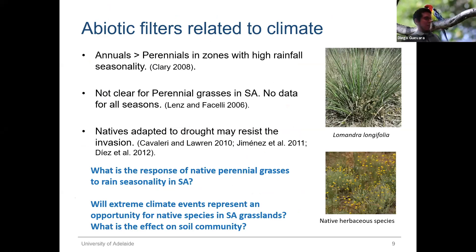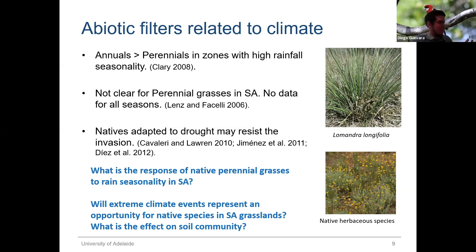The first part of my PhD will be about abiotic filters related to climate. We know that annual species do better than perennials in zones with high rainfall seasonality, because they are able to take advantage of water resources faster than perennials. But the response of perennial grasses and graminoids is not completely clear in South Australia — there is data for some seasons but there is still much to be done. We also know that natives adapted to drought might resist invasion in the long term.